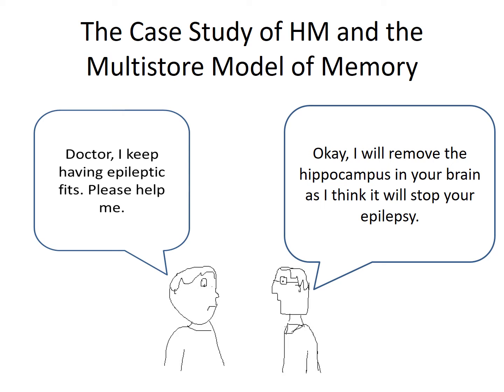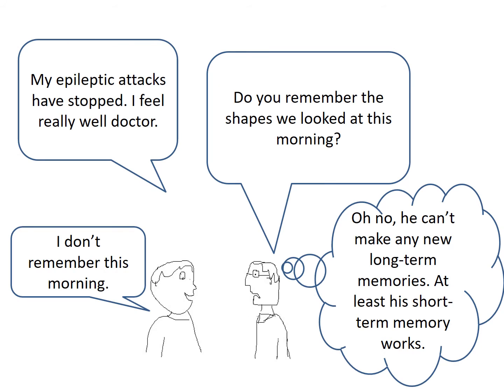The case study of HM can be used to support the multi-store model of memory. HM was Henry Millaison, and he suffered from epilepsy. He asked a doctor to help him, and one doctor thought he could help by removing the hippocampus in HM's brain. After the operation, HM's epilepsy did stop.